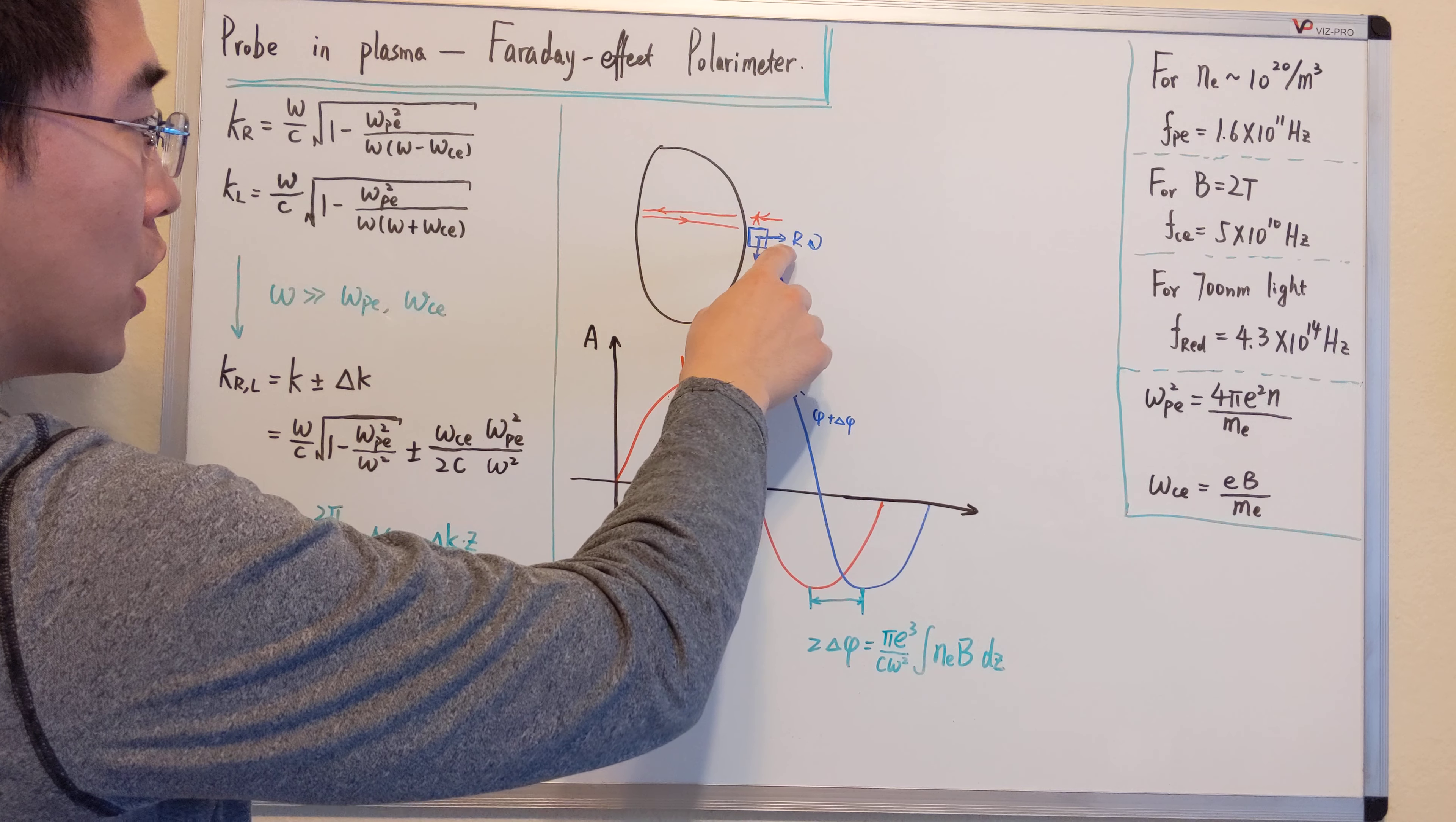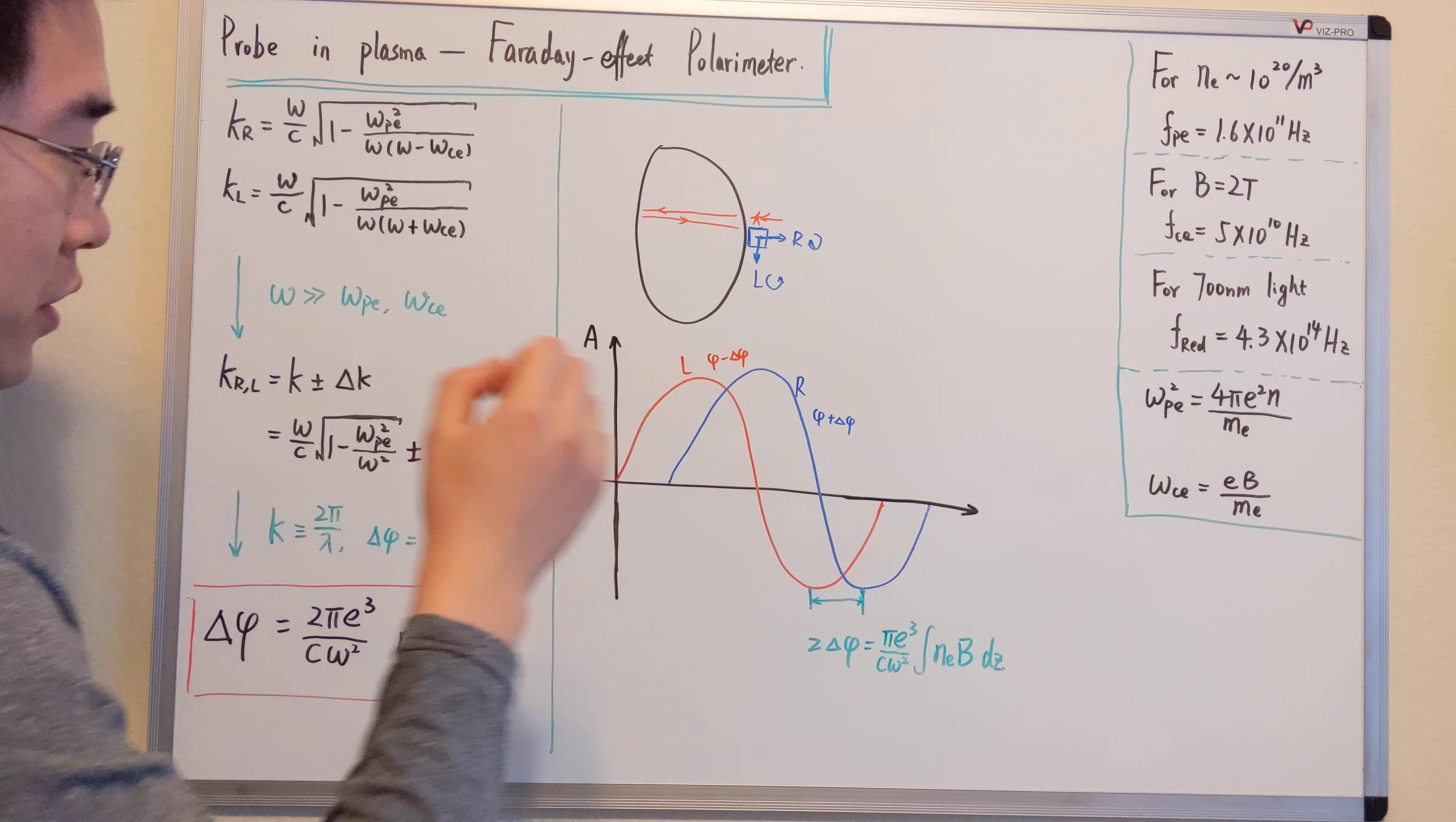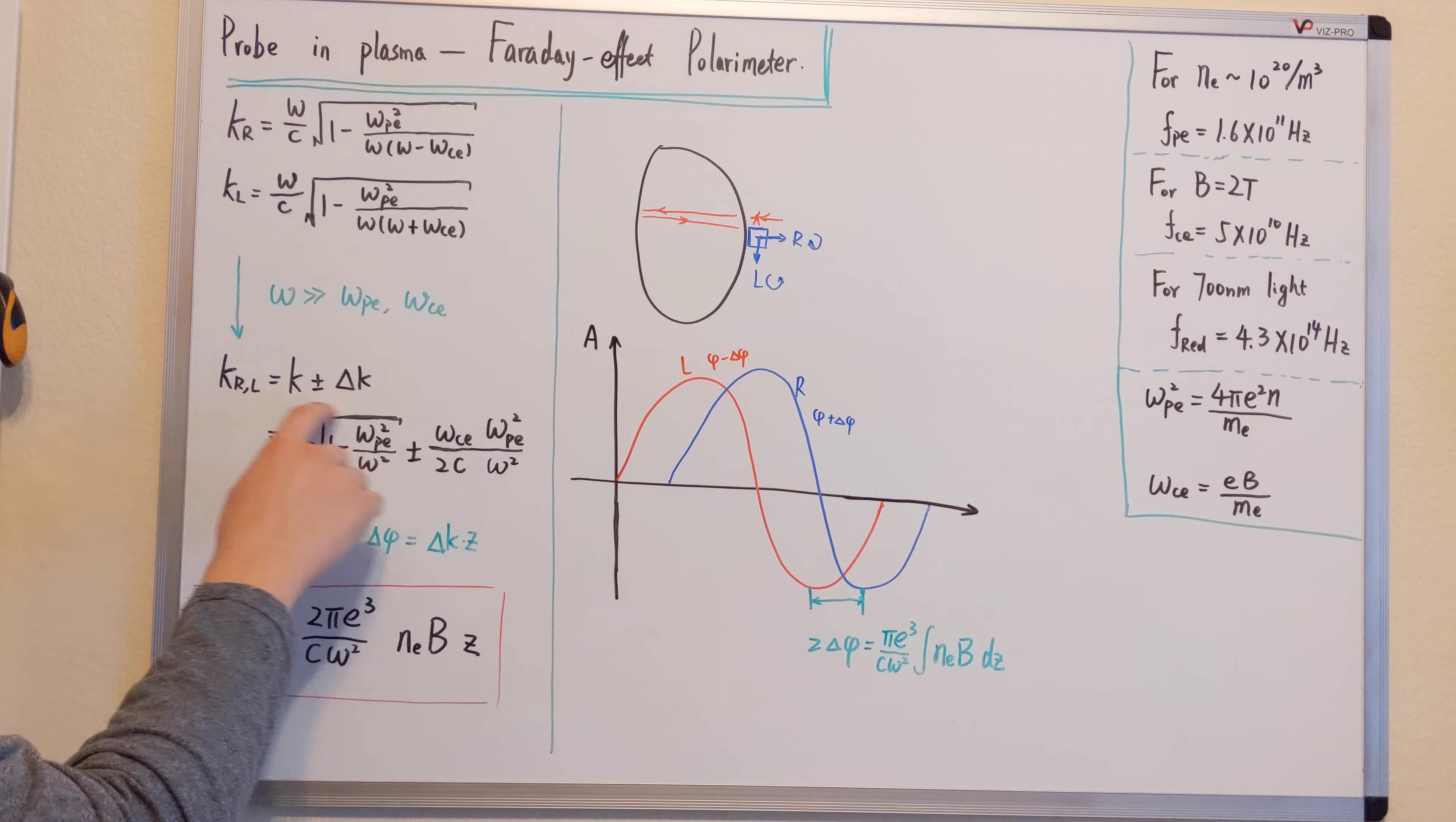We put into the oscilloscope. For the left hand and right hand, we have phi plus minus delta phi. Similar to this, basically we multiply with z on both sides.